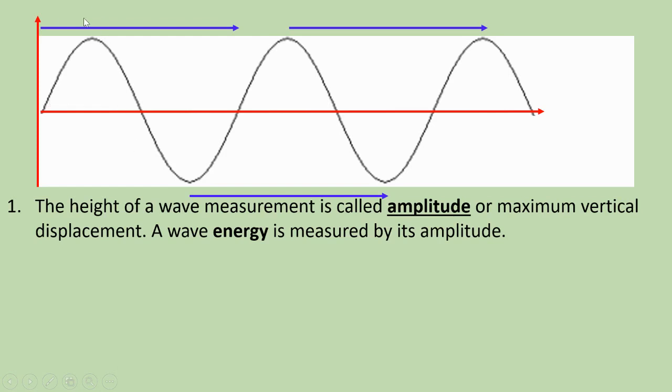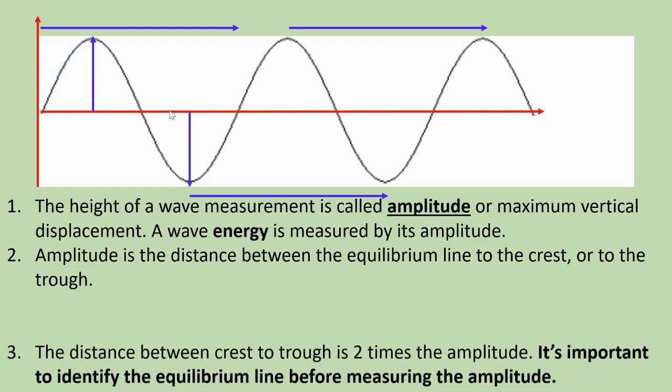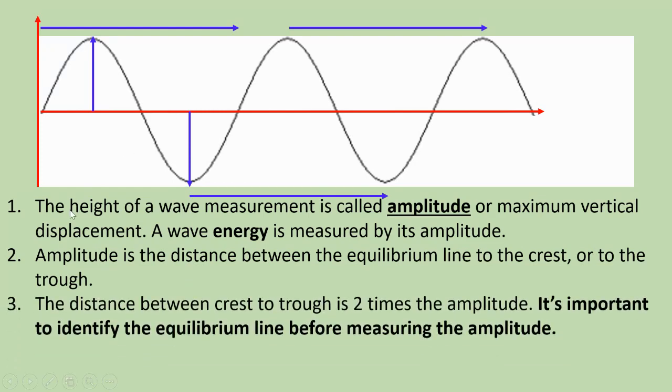A wave energy is measured by its amplitude. Taller the wave, more energy it carries. An amplitude is the distance between the equilibrium line to the crest, or from the equilibrium line to the trough. The distance between crest to trough is two times the amplitude. It's important to identify the equilibrium line before measuring the amplitude.